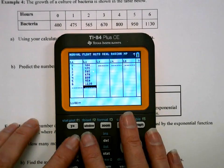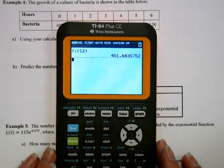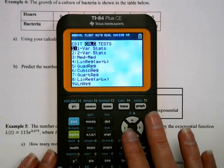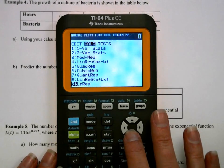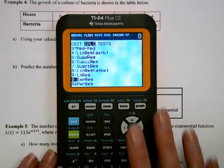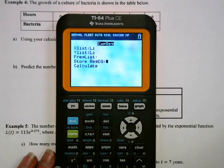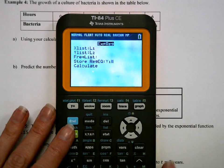We're going to get out of the list. Then we're going to go to stat, over to calc, down to that exponential regression again. Exponential regression, list one, list two. We're using it, so let's store it in y1. And then we will calculate.